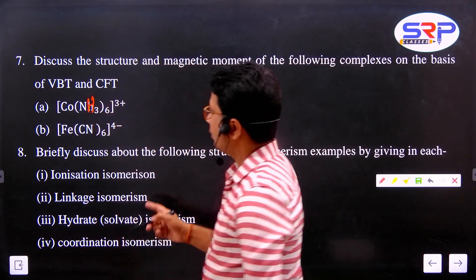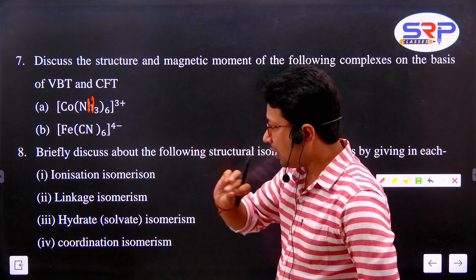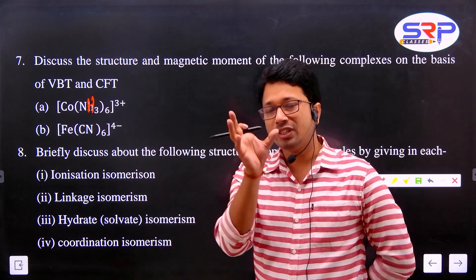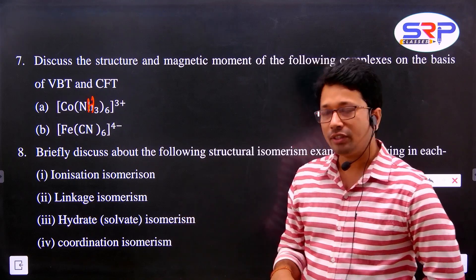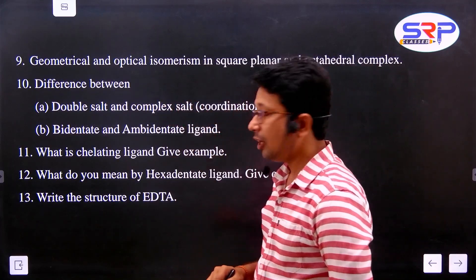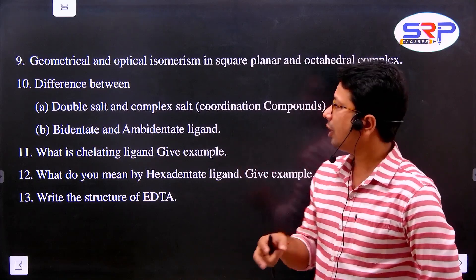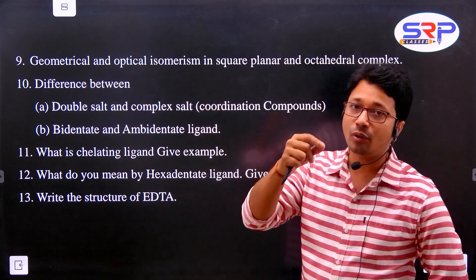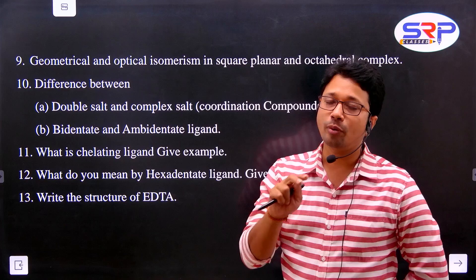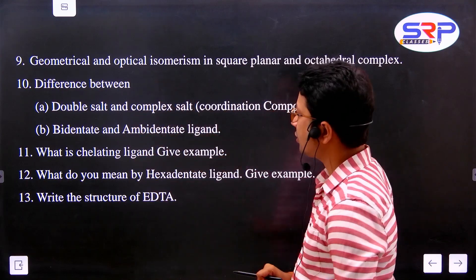Discuss structural isomerism - this is a long question. Most commonly asked types: linkage isomerism, hydrate isomerism, coordination isomerism. Geometrical and optical isomerism are important - cover square planar, octahedral, and tetrahedral types. For octahedral: facial and meridional isomers. Optical isomerism also important. Difference between double salts and complex compounds. Monodentate, bidentate ligands - give examples of chelating ligands.